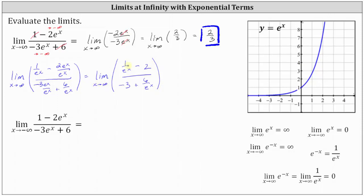One divided by e to the x approaches zero as x approaches infinity, because the numerator is one and the denominator is increasing without bound. Similarly, six divided by e to the x also approaches zero. So now we're just left with negative two divided by negative three, which also gives us positive two thirds.